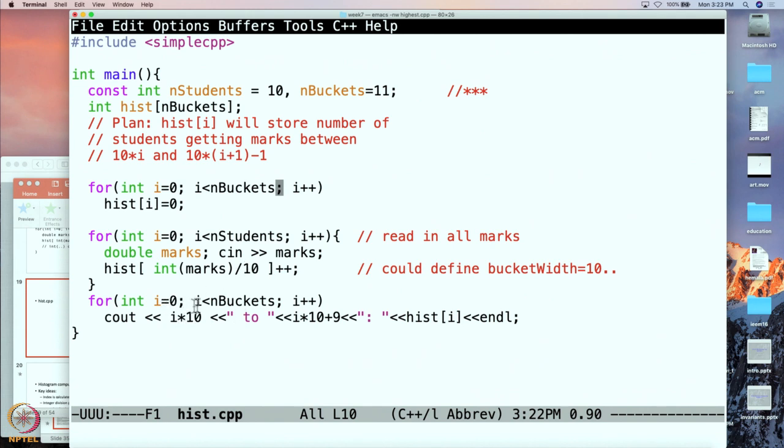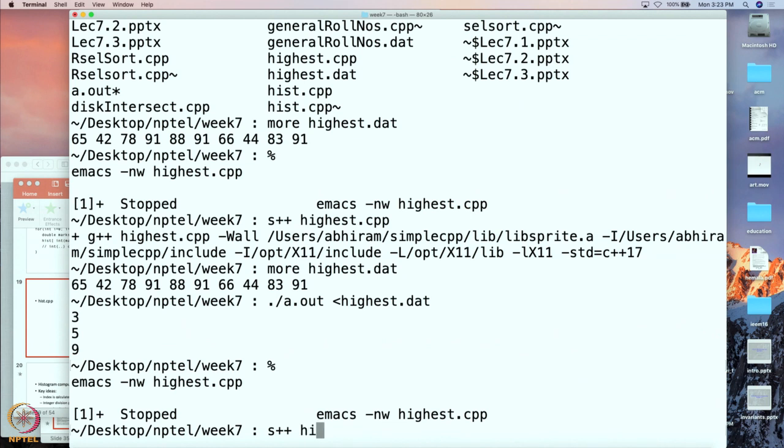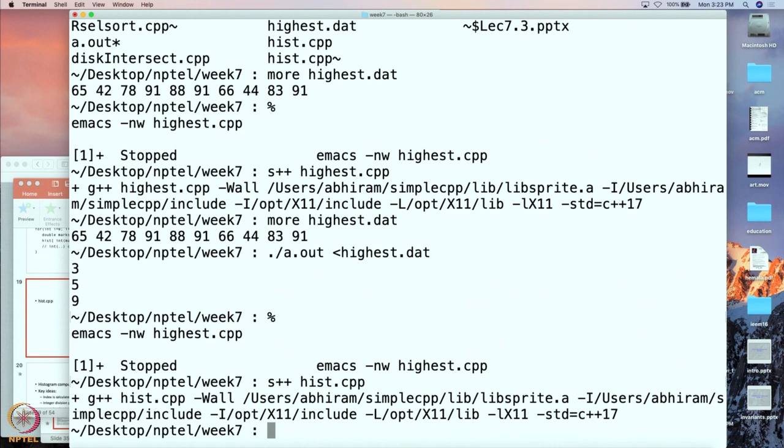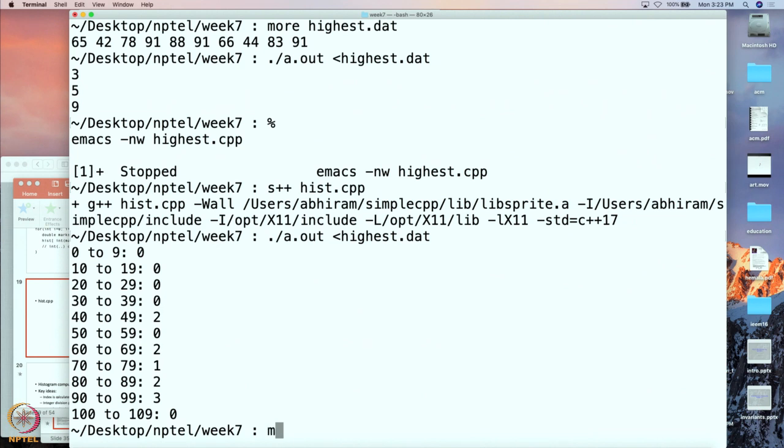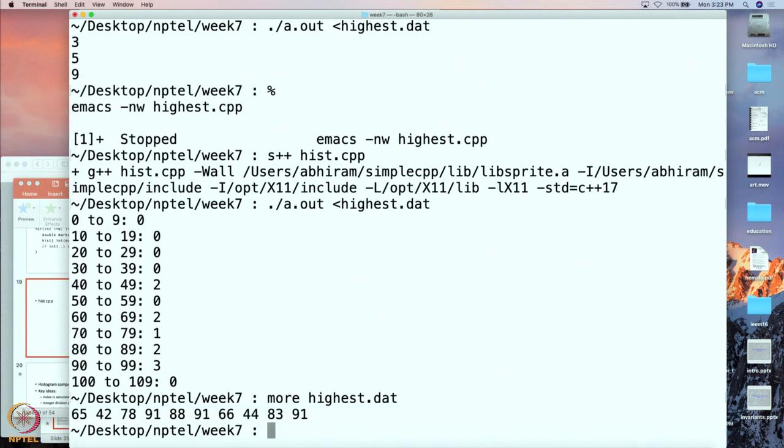Finally, I am going to print out the contents of all the buckets. I print a message saying in the range i times 10 to i times 10 plus 9, there are so many marks. Let us run it. Let me compile it. I am going to use the same set of numbers as I had earlier. These are the numbers, and for these numbers, this was the histogram.